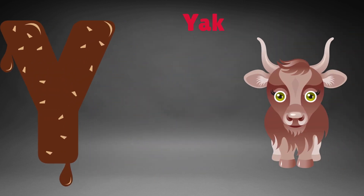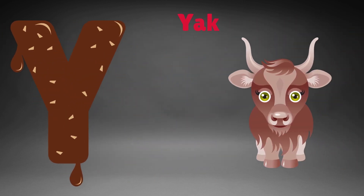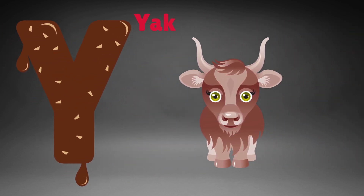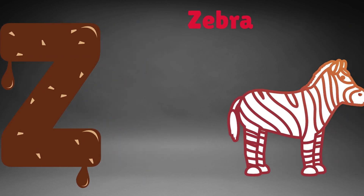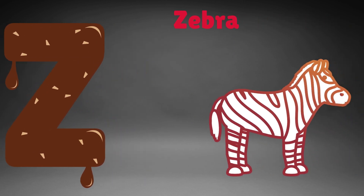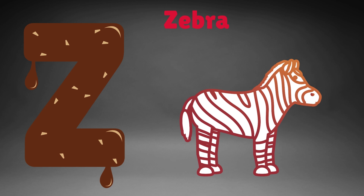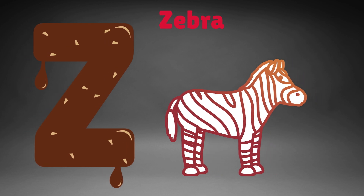Y is for yak, y-y-yak. Z is for zebra, z-z-zebra.